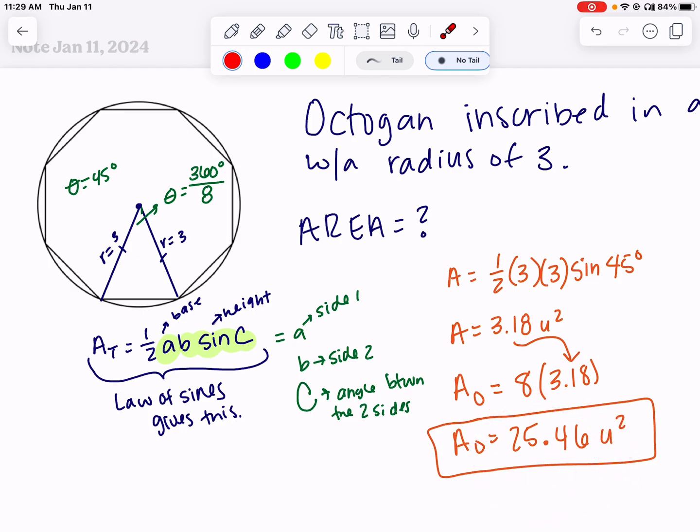The only thing that would change for a different shape is that your theta will be divided by how many sides your shape has, and your side lengths will be whatever the radius is. So this was specifically an octagon with radius 3, but this method could be used for any inscribed regular polygon given a circle where you know the radius.